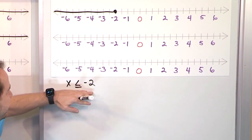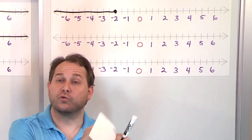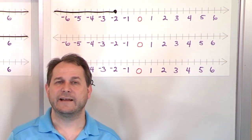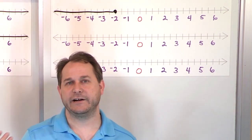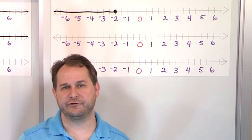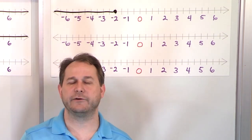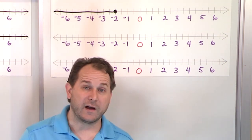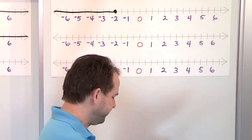The answers to all of these things are going to be ranges of values — that's the difference between an inequality and an equation. An equation means they're equal, and there's one solution generally for a simple linear equation. But for inequalities, there's a whole range of solutions.